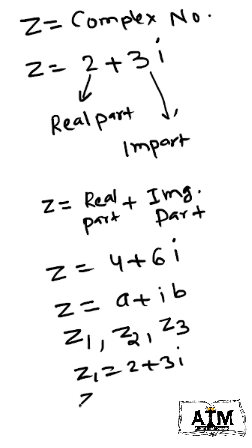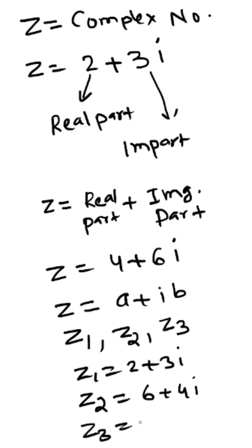z2 equals 6 plus 4i, and z3 equals 10 plus 5i. So a complex number comprises a real part and an imaginary part.